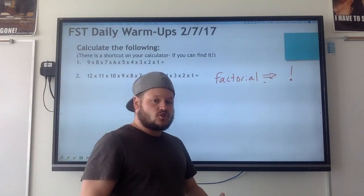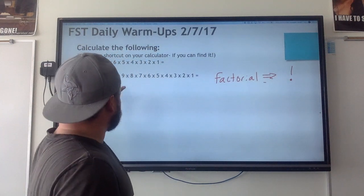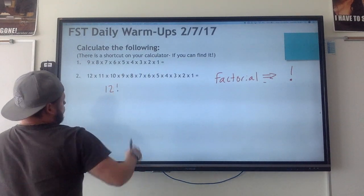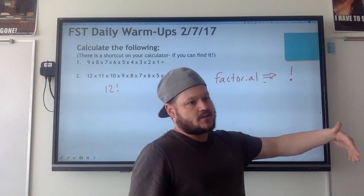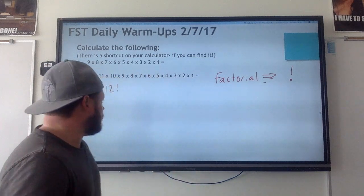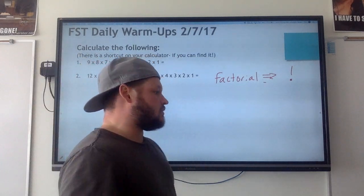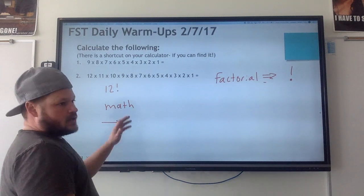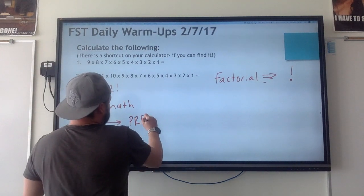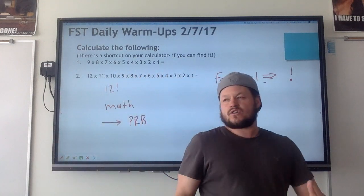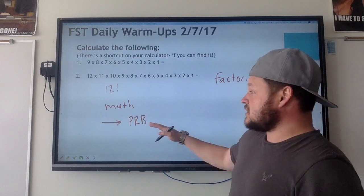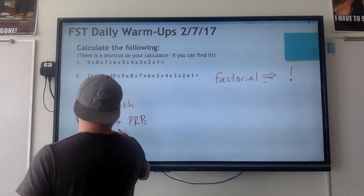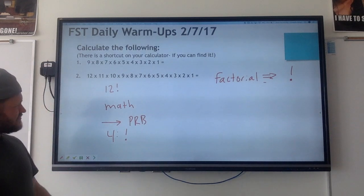I want to show you how to actually do this in your calculator. If I were to do twelve times eleven times ten times nine times eight all the way to one, that is twelve factorial. All the factorial means is a number times one less than that, times one less than that, and so on all the way down to one. To type twelve factorial into your calculator: hit Math, scroll over to the tab that says PRB — that's your probability tab with all your permutation and combination stuff. Go to Math, PRB, and the fourth option down will be your factorial.